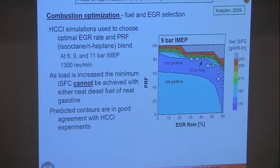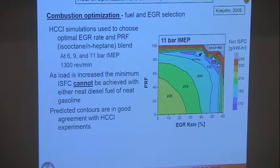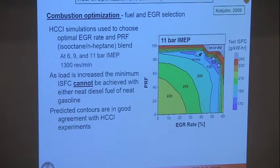At the higher load case of 11 bar, the misfire region is much smaller. You can run with a lot of gasoline over a wide range of EGR. You want a lot of gasoline to get low pressure-rise-rate performance, while down at low EGR you have very high pressure rise rates that would be totally unacceptable in practice. What we learned is that one fuel is going to be hard to match with HCCI over a wide range of loads.